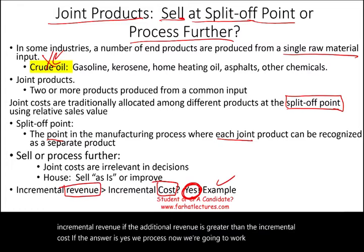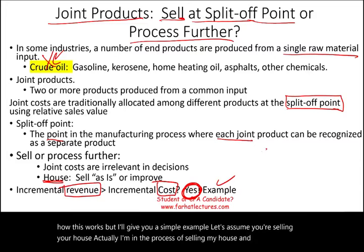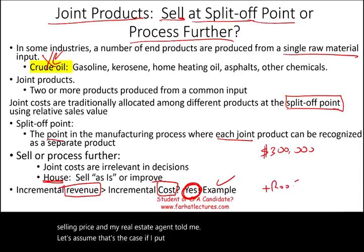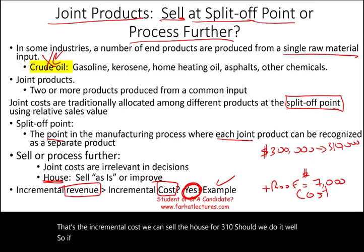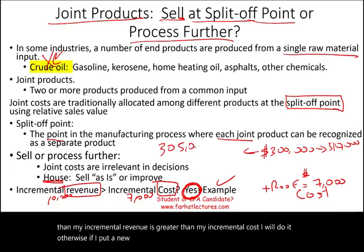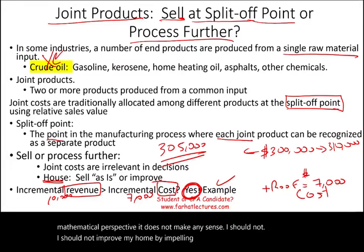Here's a simple example: assume you're selling your house at $300,000. Your real estate agent says if you put a new roof — an incremental cost of $7,000 — you can sell for $310,000. The incremental revenue is $10,000, which exceeds the incremental cost of $7,000, so you should do it. But if the new roof only raises the price to $305,000 for a $5,000 gain against $7,000 in cost, mathematically it does not make sense — sell as is.